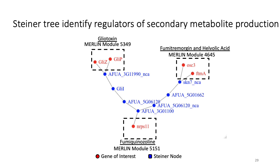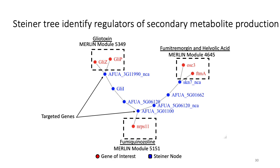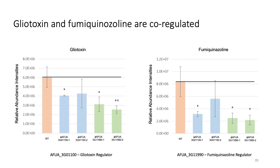We have applied the Steiner tree algorithm to the particular problem of finding co-regulated secondary metabolite genes in our network. Gliotoxin, Fumitremorgin, and Fumiquinazoline are three important secondary metabolites with important clinical applications. However, the regulatory mechanisms of these metabolites are poorly understood. It is expected that they are co-regulated since they all play a role in antifungal defense. Our collaborators in the Keller lab selected two genes from the Steiner tree to modify, based on their proximity to the corresponding Merlin modules. They then measured the production of secondary metabolites using mass spectrometry. The results showed a significant change in gliotoxin and fumiquinazoline production in both of the knockdown strains, indicating that the Steiner tree was able to correctly identify possible co-regulators of these two secondary metabolites.